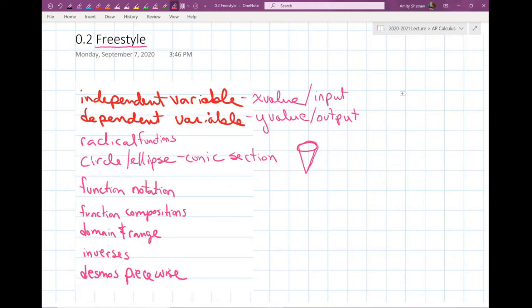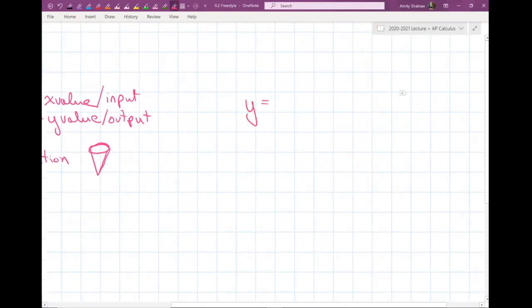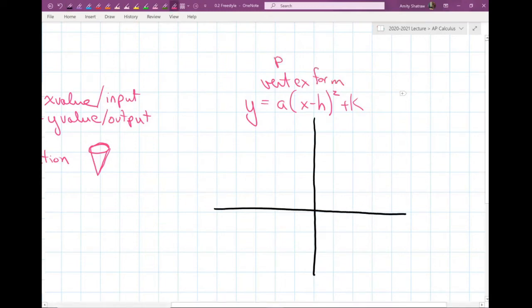I want to talk about parabolas first because if you take a parabola, Y equals A times X minus H quantity squared plus K, this is vertex form of a parabola. What is the inverse of a parabola? Because inverses is the topic that we're working on right now.